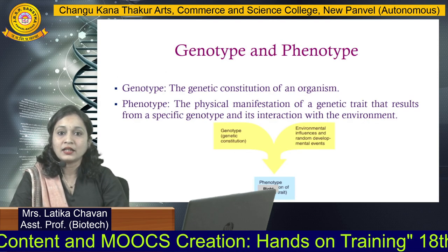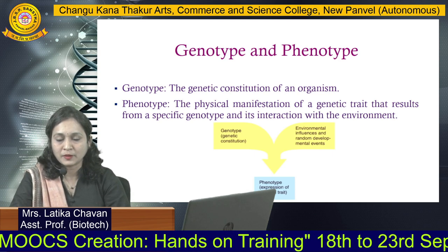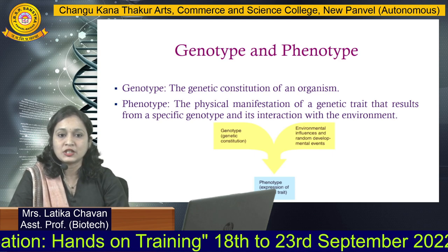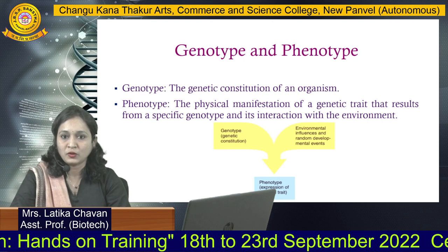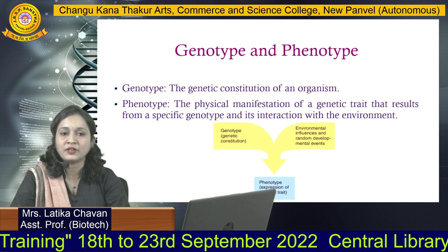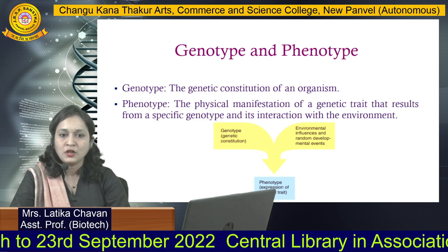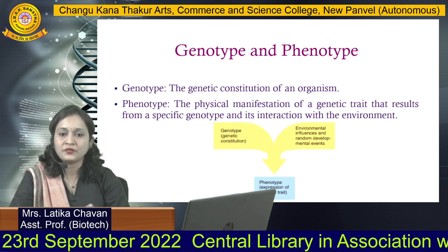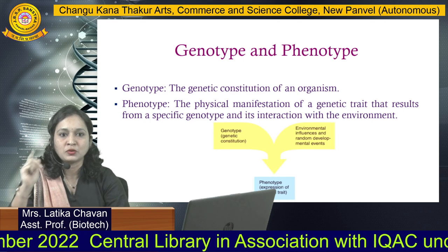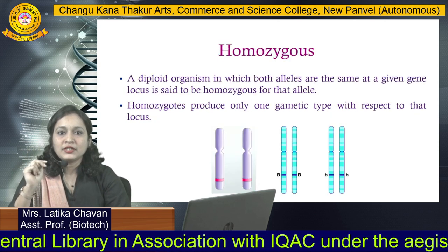Next there are two more concepts which are genotype and phenotype. What is genotype? It is basically the genetic constitution of an organism. Phenotype is produced because of the interaction of the environment with the genotype. So always the phenotype is produced because of interaction with the genotype and the environment.